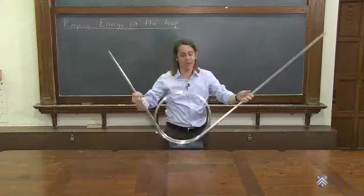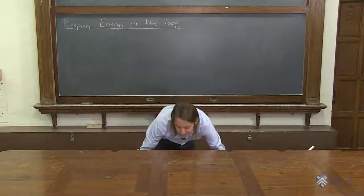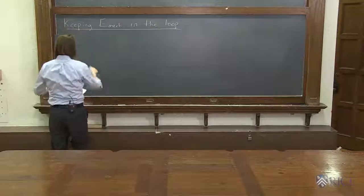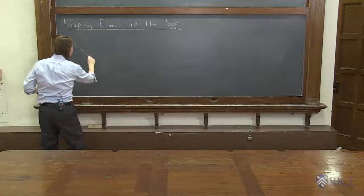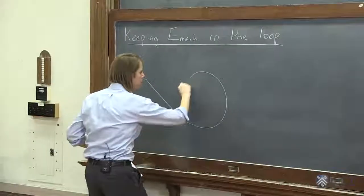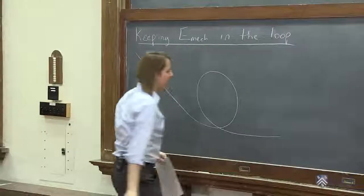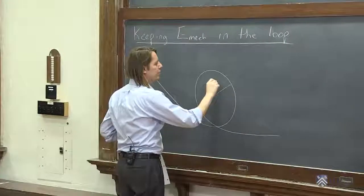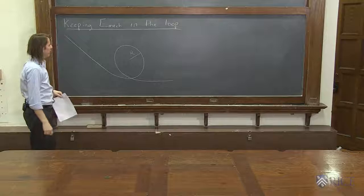So now let's calculate how high we need to release it from so it'll make the loop. Let's see. So we draw our loop something like this. Like that. And we want to know how high to put it here so it'll make it around the loop of radius r there.